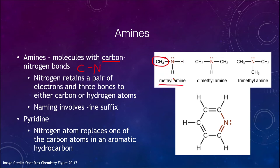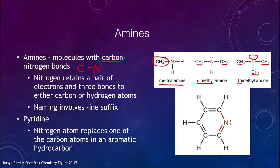So there is one methyl here, so that becomes methylamine. We could have two methyl groups, and that gives us dimethyl — remember the prefix di meaning two — or trimethyl with three, where we have three methyl groups bonded to the nitrogen atom. Now, nitrogen retains its lone pair of electrons and therefore has three bonds available, and can bond to either a carbon, for example a methyl group, or hydrogen atoms.